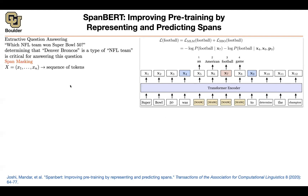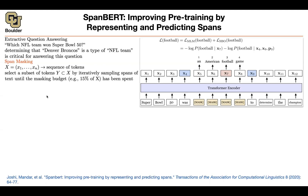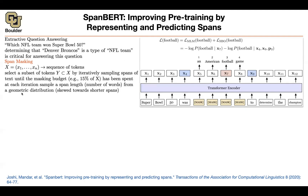What is the masking strategy in mathematical terms? You have a sequence of tokens and you want to select 15 percent of them to be masked. The big idea is that you iteratively sample spans of text until you reach your masking budget. Previously masking was simpler — select uniformly at random 15% of tokens — but now they have to be consecutive, so you sample iteratively. At each iteration, you first sample a mask length from a geometric distribution.